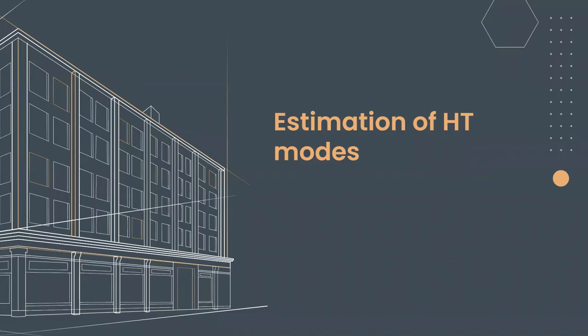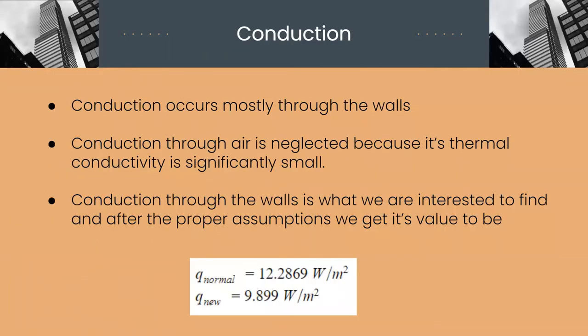Now let's talk about various types of heat transfer modes in our system. Let's look at the conduction mode of heat transfer. Conduction occurs mostly through the walls. We have neglected conduction through air because air acts as an insulating material with thermal conductivity being very less. Conduction through walls is calculated for normal and composite walls and the calculation part is shown later in the presentation.